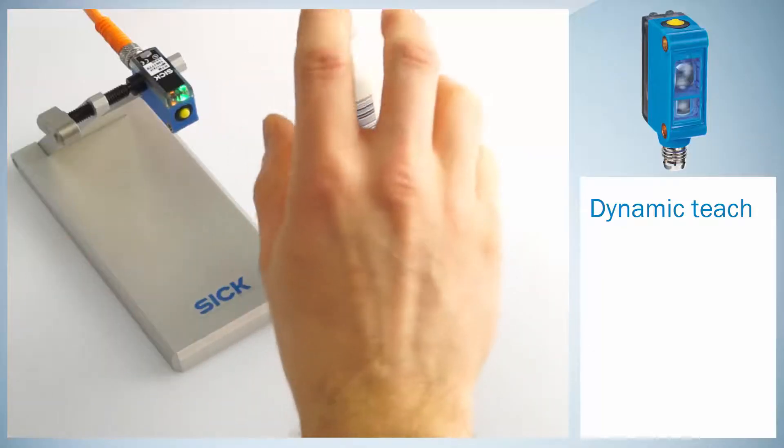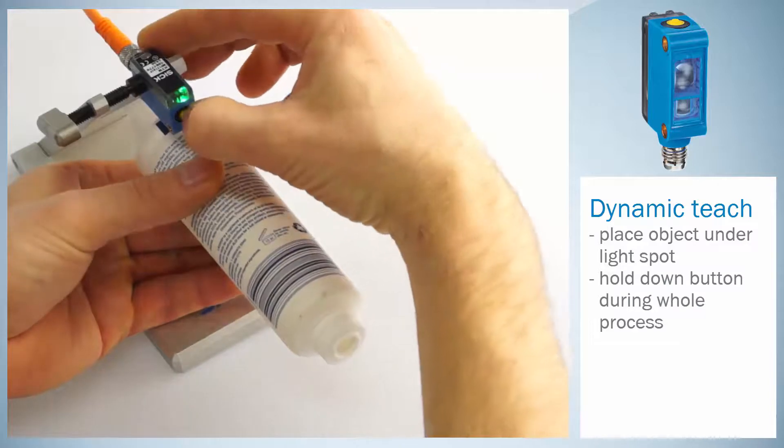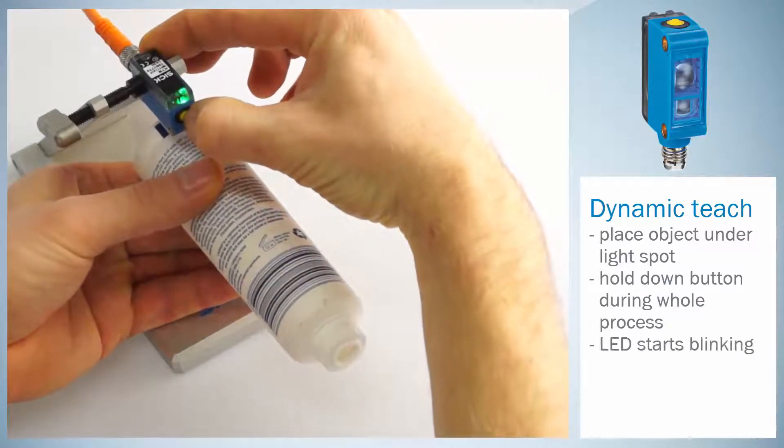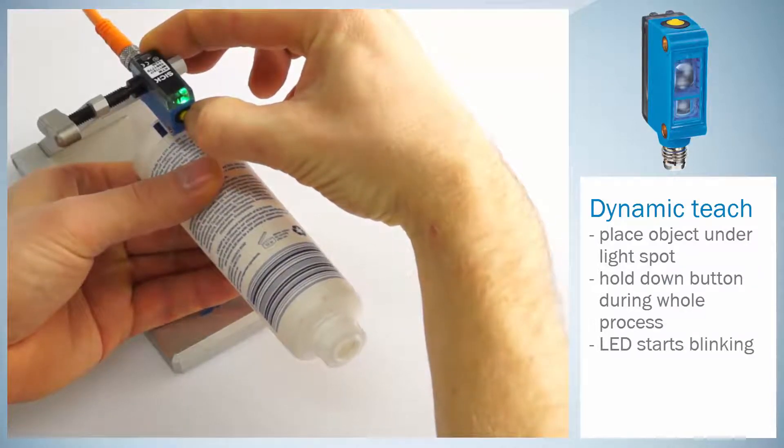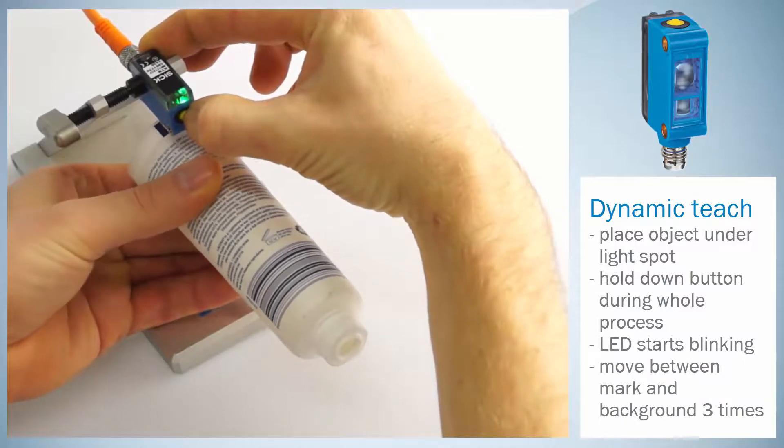For the dynamic teach-in, place the object under the light spot and hold the teach button down for the whole process. After three seconds, the LED starts blinking. Now move the material between mark and background for at least three times.